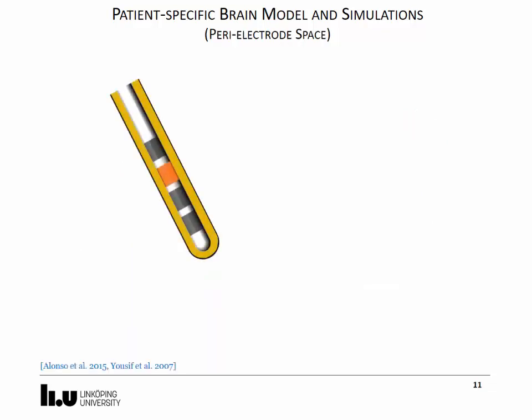The model may also consider a tissue electrode interface or peri-electrode space assigned with the corresponding electrical conductivity determined by the time point of implantation. This is represented with the yellow surrounding.